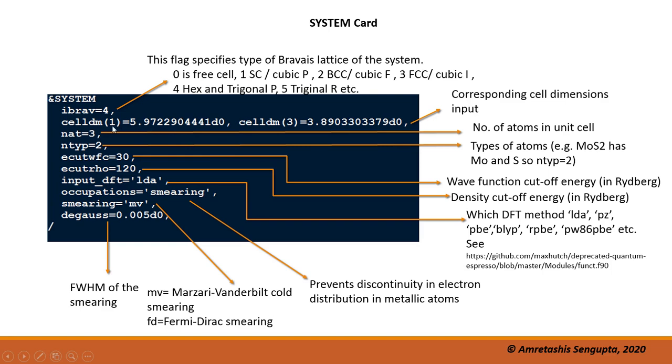Then comes the cell dimensions. This is hexagonal, so it will take a and c: celldm(1) and celldm(3), a and c. These are specified in terms of the dimensions of the cell. Thereafter, you have the number of atoms. Because there are three atoms in the MoS2 unit cell, you have nat equals three. N-type is the number of different types of atoms. MoS2 has Mo and S, so ntyp will be two. If it is graphene, only one type of atom is there—carbon—so it will be one.